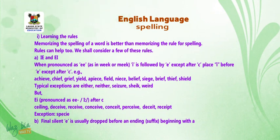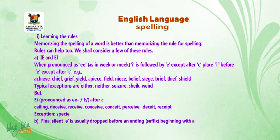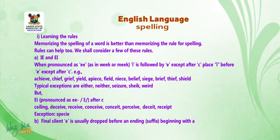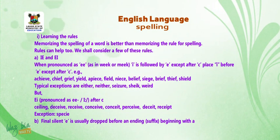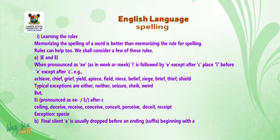Examples of I before E: seed, brief, thief, shield. Typical exceptions are: either, neither, seizure, shake, wield. But AI is pronounced as E after C.